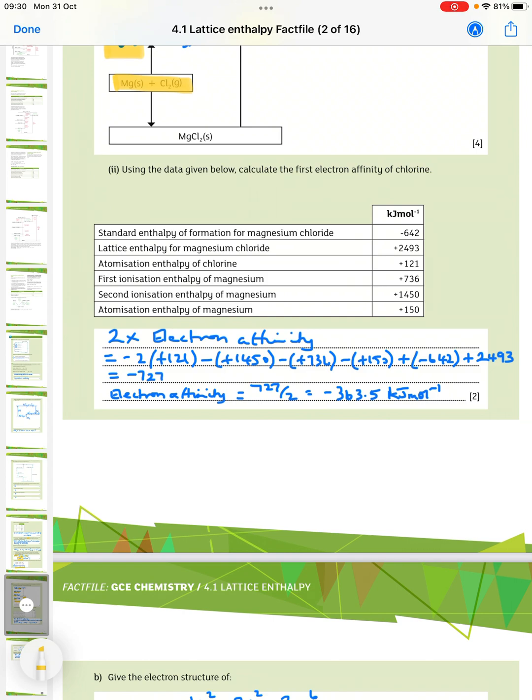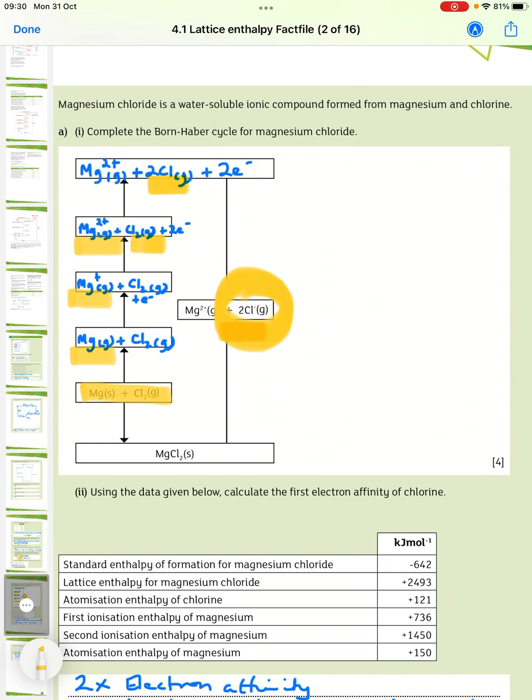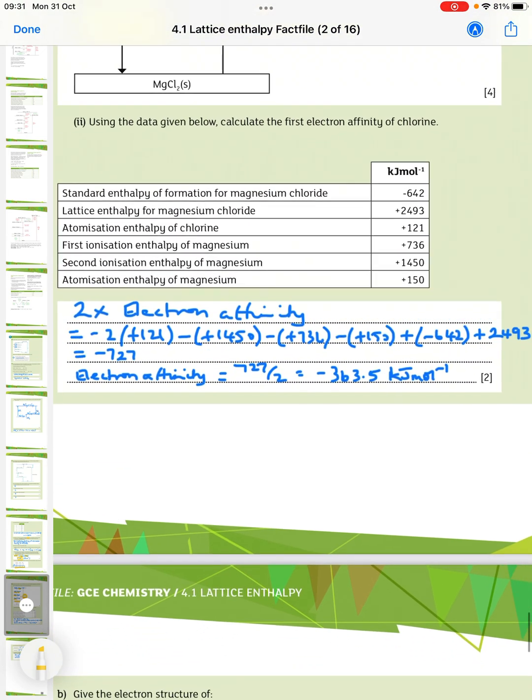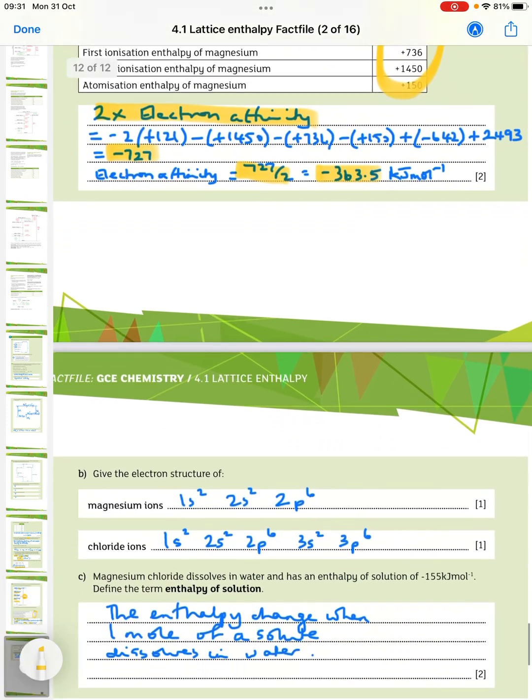So, then, using the data, calculate the first electron affinity of chlorine. So, what's really important is you realise from the equation here, it's 2 Cl minus, and then you're just plugging the values in. So, 2 times the electron affinity is equal to, and then we're just sticking in the values from here. So, 2 times 121, so that's minus 1450 minus 736 minus 150 minus 642. And then, plus 2493 gives you minus 727. So, that is 2 times the electron affinity, so divide it by 2, and the answer is minus 363.5.